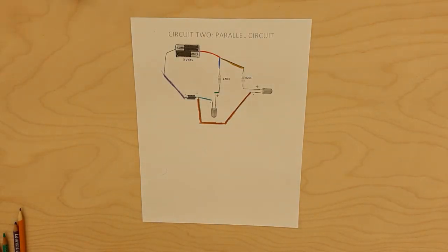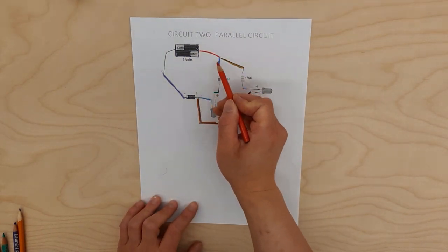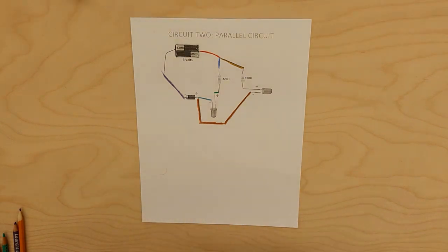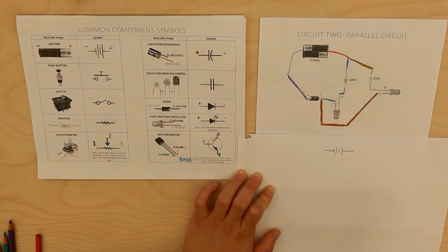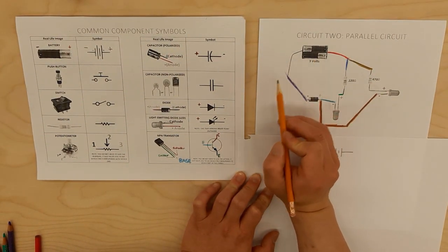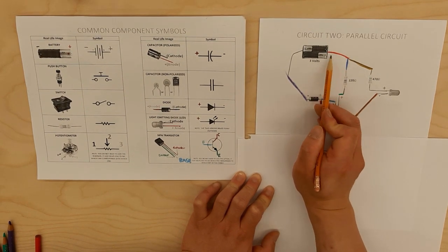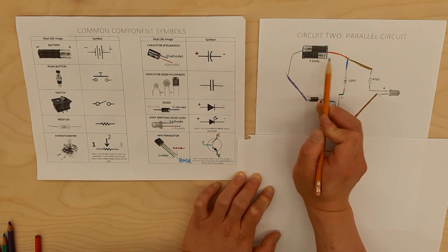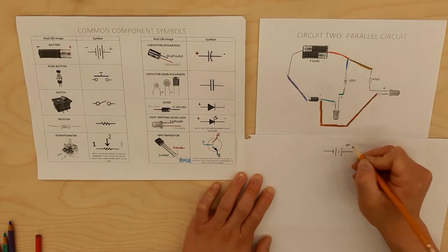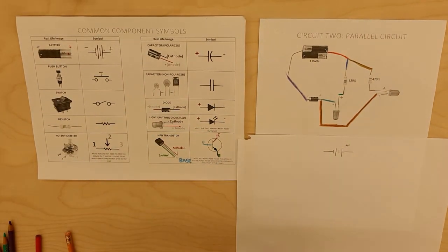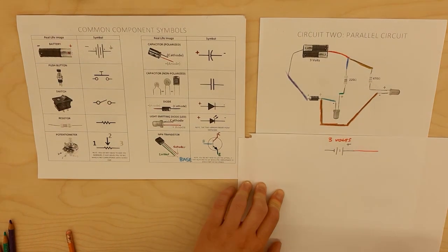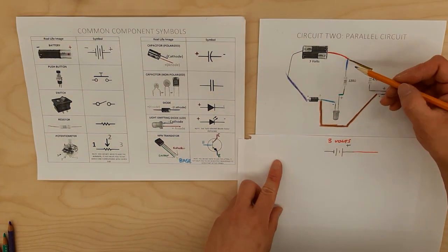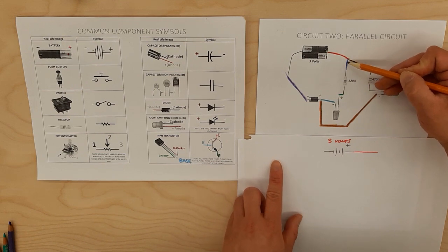Let's move on to our second circuit, which is called a parallel circuit because it has parallel branches. Before we get overwhelmed, let's take it one step at a time and start with the battery. In the diagram it doesn't specify which is positive and which is negative, but I can infer that red is traditionally positive and black is traditionally negative. I'm going to focus on one component at a time, starting with the blue branch and ignoring the other path for now.